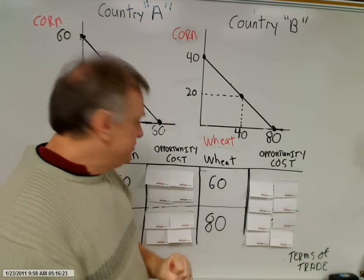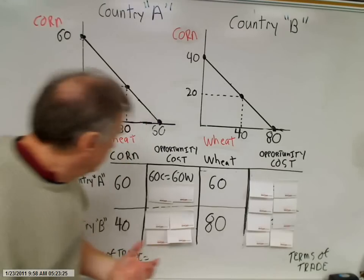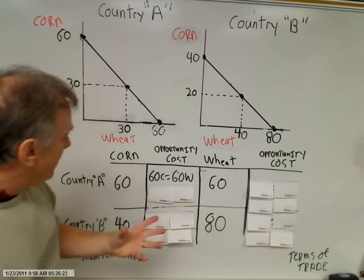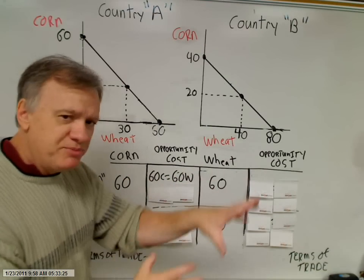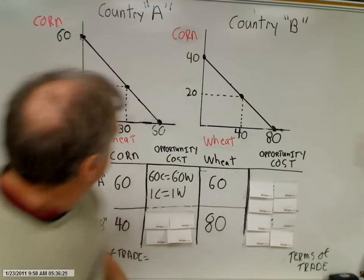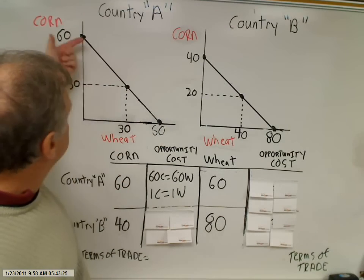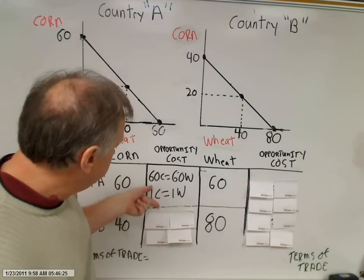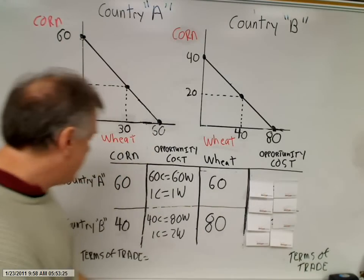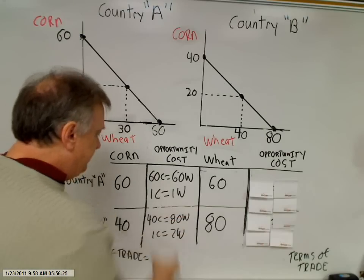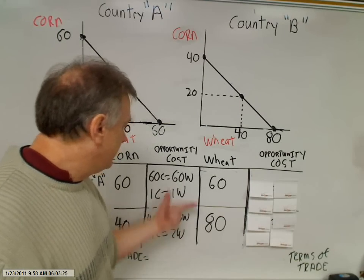To calculate opportunity costs, we set these numbers in a ratio and simplify. For country A: 60 corn to 60 wheat simplifies to one corn costing one wheat — a one-to-one trade-off. For country B: 40 corn to 80 wheat simplifies so that the opportunity cost of producing one bushel of corn is two bushels of wheat.